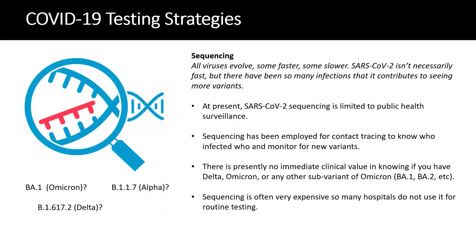Sequencing became a major operation. Public health labs performed it for surveillance, and it helped with contact tracing — at our institution we traced a patient who infected employees through sequencing. It helped predict emergence of new variants. However, there was no real clinical value at the time: knowing Delta or Omicron was present was informative but did not generally change patient management, and sequencing is very expensive, so many hospitals did not use it for routine testing.